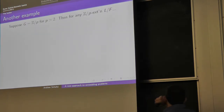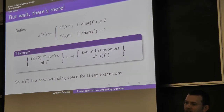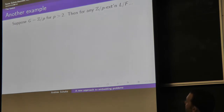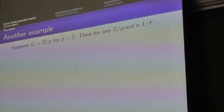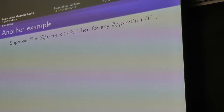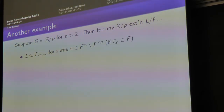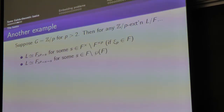When P is bigger than 2 you want to know about Z/PZ extensions. You can adjoin the Pth root of something, provided you have the appropriate roots of unity — specifically a primitive Pth root of unity ζₚ. If that's in your field, every Z/PZ extension is given by a root of an element; this is Kummer theory with P > 2. When you're in characteristic P, the analog is Artin-Schreier theory where P(F) consists of elements of the form aᵖ − a.